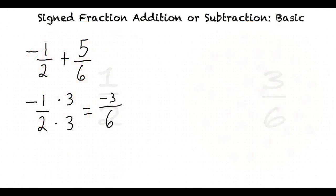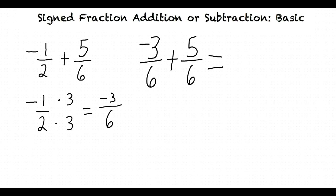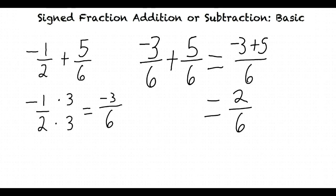Since our second fraction already has 6 in the denominator, we don't need to change it. Now our expression looks like this: negative 3 over 6 plus 5 over 6. Now that the denominators are the same, we can add the numerators to get our final answer: negative 3 plus 5 over 6 equals 2 over 6.